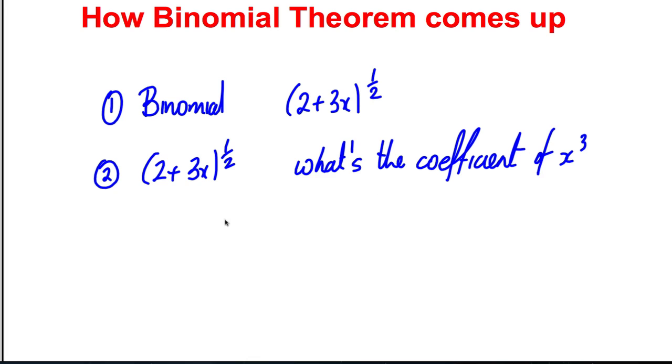It also tends to come up after partial fractions - you split something into partial fractions and then use the binomial theorem to write out an expansion up to X^3 or something. So that's the binomial theorem in five minutes, and I hope that was good revision.